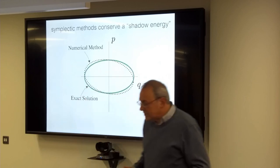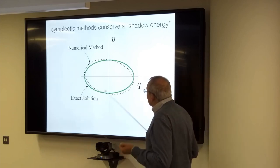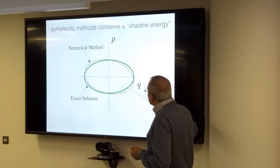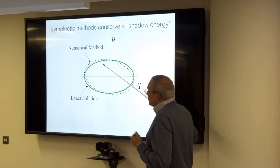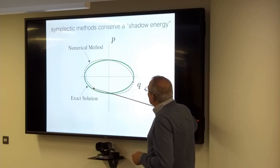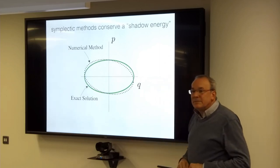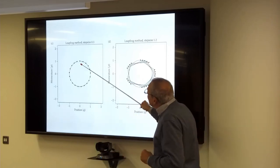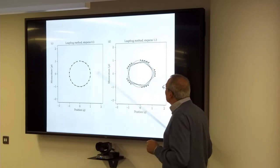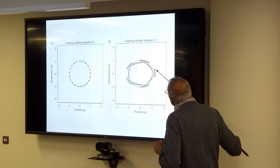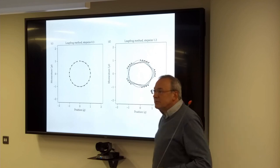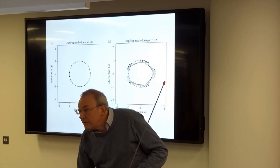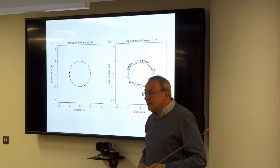What do we mean by approximately conserving energy? For a one-degree-of-freedom problem with one Q and one P, a symplectic method gives a distorted ellipse instead of the exact ellipse. For the leapfrog method with a small step size you get something close to a circle; with a larger step size you get points along a squashed ellipse. These properties of symplectic methods allow you to use them in Hamiltonian Monte Carlo calculations.